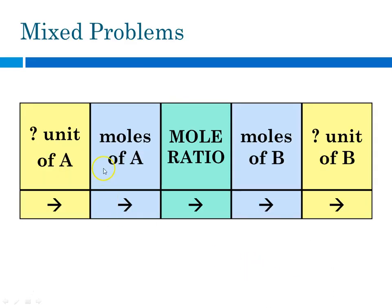Now we're going to try a mixed problem. In a mixed problem, you're going to get some unit. If it's grams, your first step will be going to moles using molar mass. If it's liters, your first step is going to moles using molar volume. And if it's particles, your first step will be using Avogadro's number to get to moles. The next part would be the mole ratio, going from moles of this to moles of that. And then finally, with your final unit, you'll use molar mass to get to grams, molar volume to get to liters, or Avogadro's number to get to the number of particles.